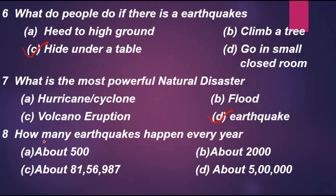Question 8: How many earthquakes happen every year? Option A: about 500. Option B: about 2,000. Option C: about 8,150,987. Option D: about 500,000. The correct option is B, about 2,000.